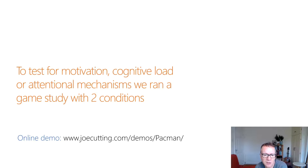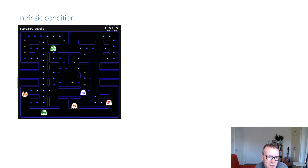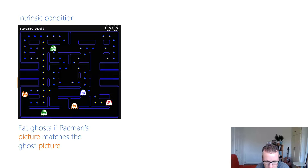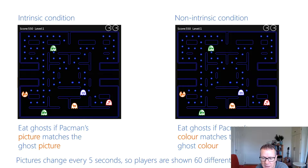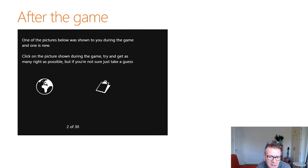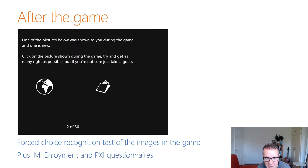To test for motivation, cognitive load, or attentional mechanisms, we ran a game study with two conditions. In the first condition, people played a Pac-Man-like game where each Pac-Man and ghost has a little picture, and if the pictures match then Pac-Man can eat the ghost with the matching picture. In the non-intrinsic condition, exactly the same game and gameplay was used, except Pac-Man eats the ghost with the same color rather than the same picture. The pictures change every five seconds so players are shown 60 different ones, and after the game they are tested on the pictures using a forced-choice recognition test and fill in questionnaires.